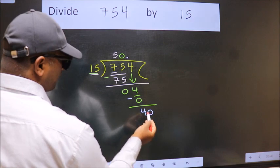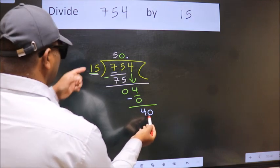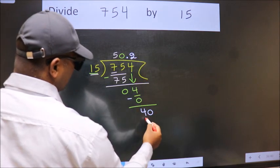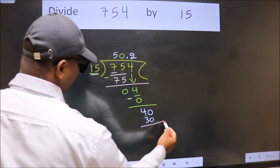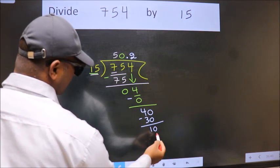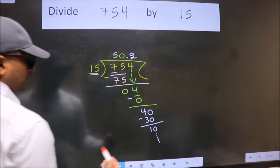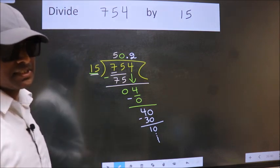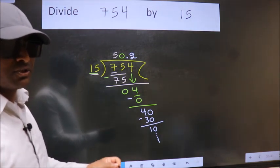So 40. A number close to 40 in 15 table is 15 twos, 30. Now we subtract. We get 10. And you continue the division. I am not doing that. Did you understand where the mistake happens? You should not do that. Don't do that mistake.